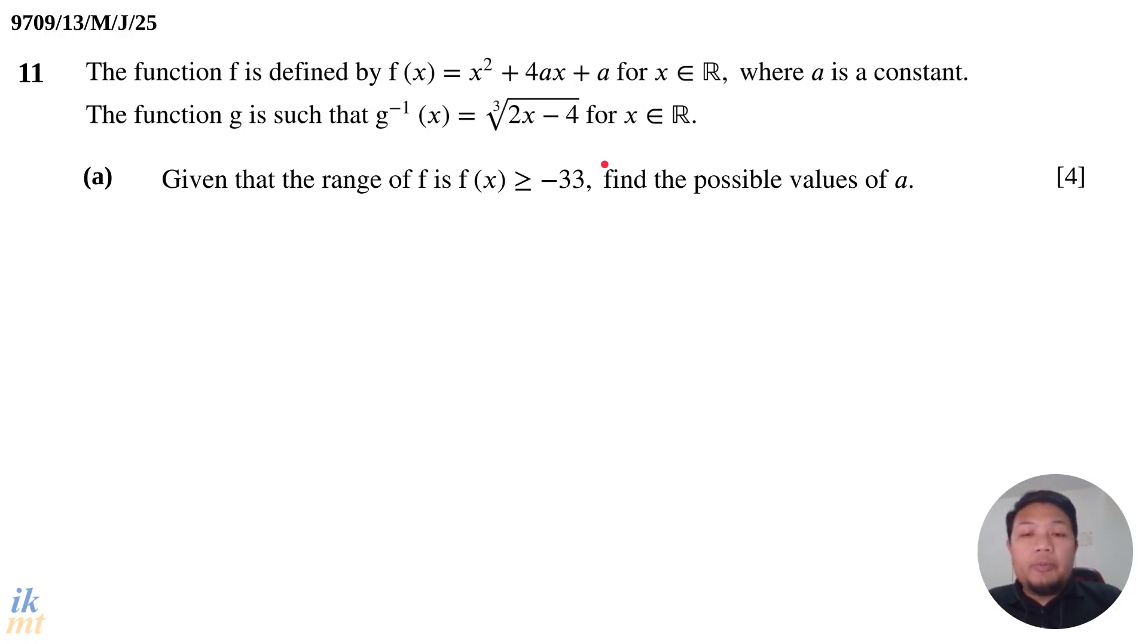So what is that information provided? Here it says the range of f is f(x) larger than or equal to negative 33. So this means that f(x) has a minimum value, minimum value of negative 33. Now, f(x) here, you can see, this is a quadratic function. So for quadratic function, it has only two shapes, which is a smile parabola or a frown parabola. So this is a positive quadratic, you can see the coefficient of x square here is a positive 1.